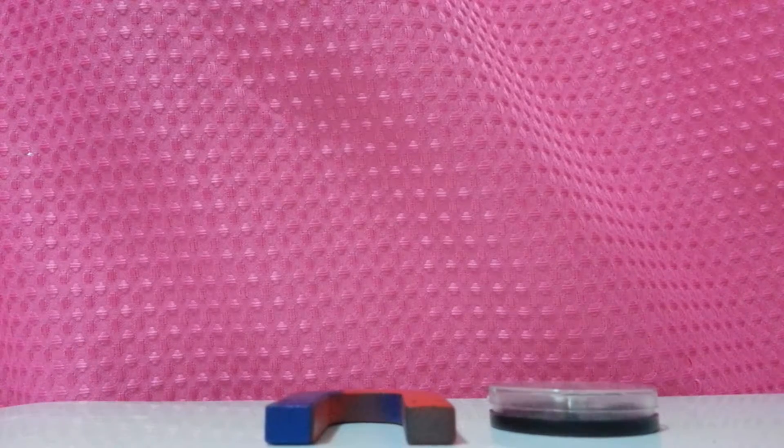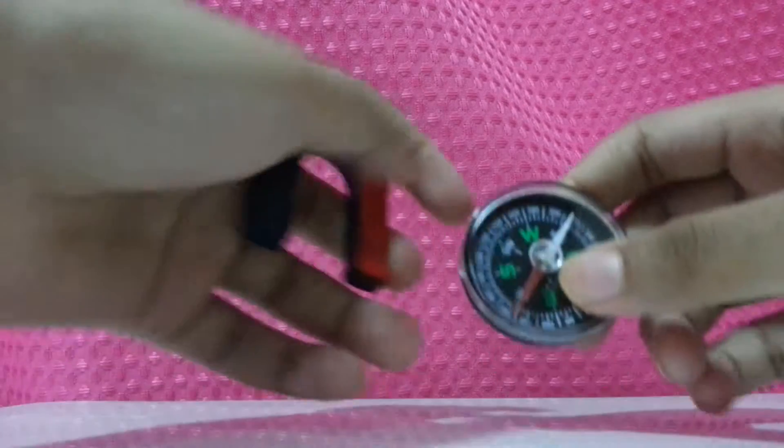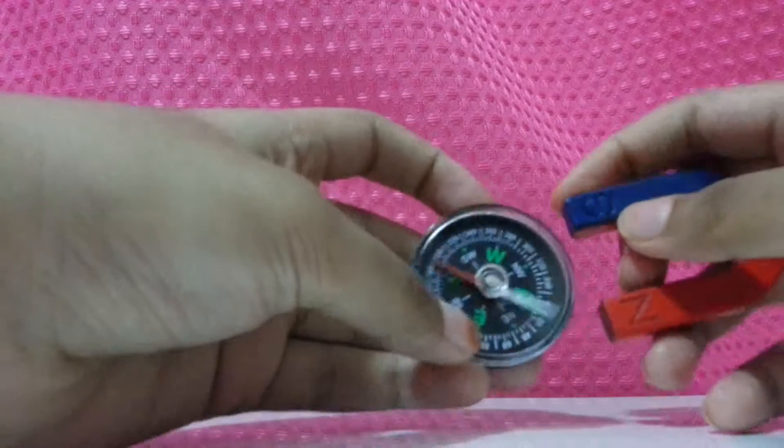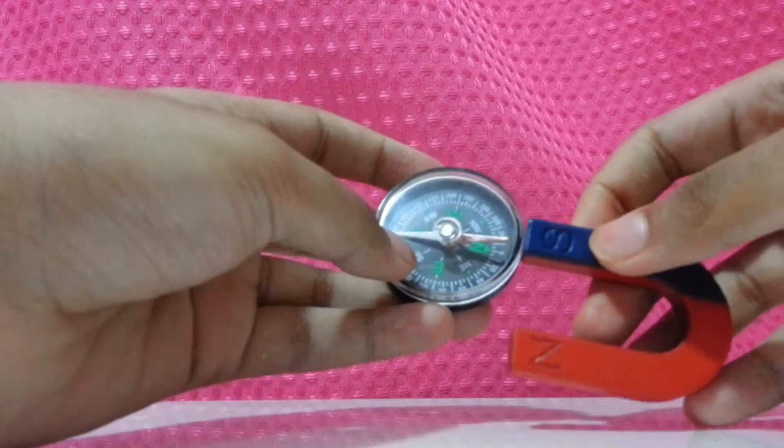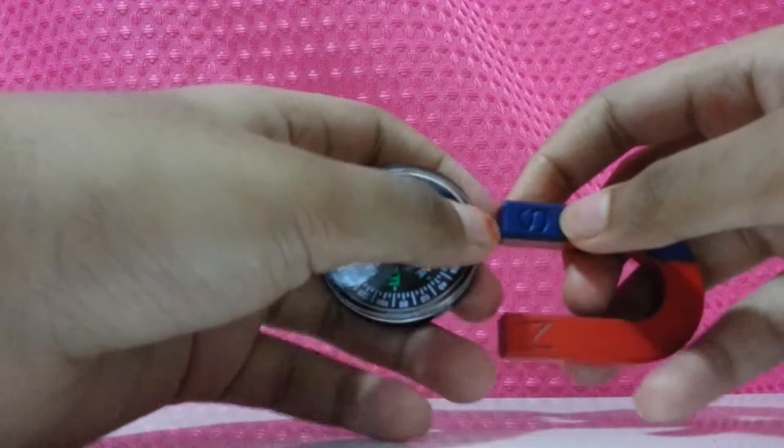You can really try this experiment at home. Take a horseshoe magnet and a compass. So when you take the south and point it to the north, yeah see. The red and the blue are attracted. It means unlike poles attract.